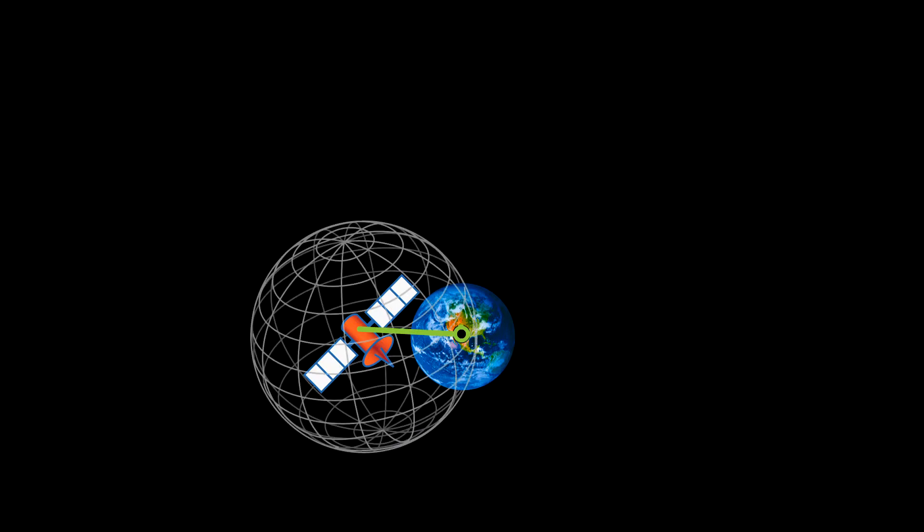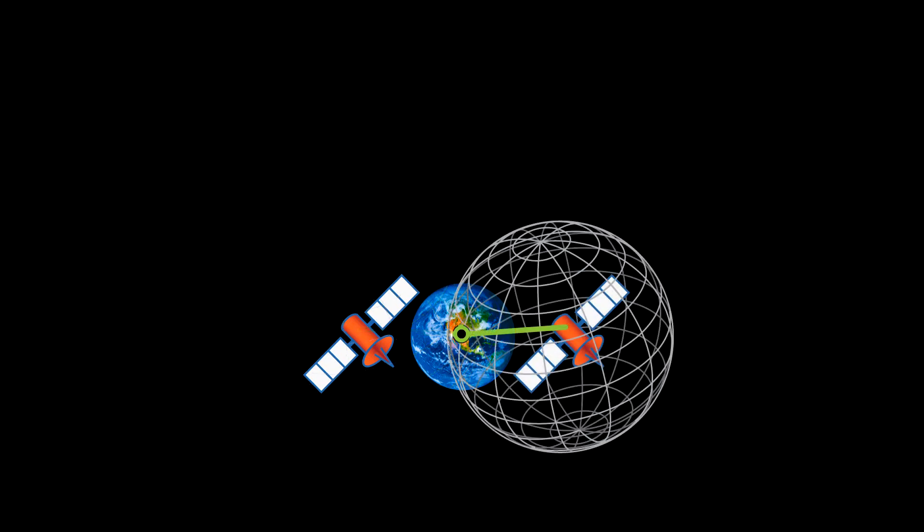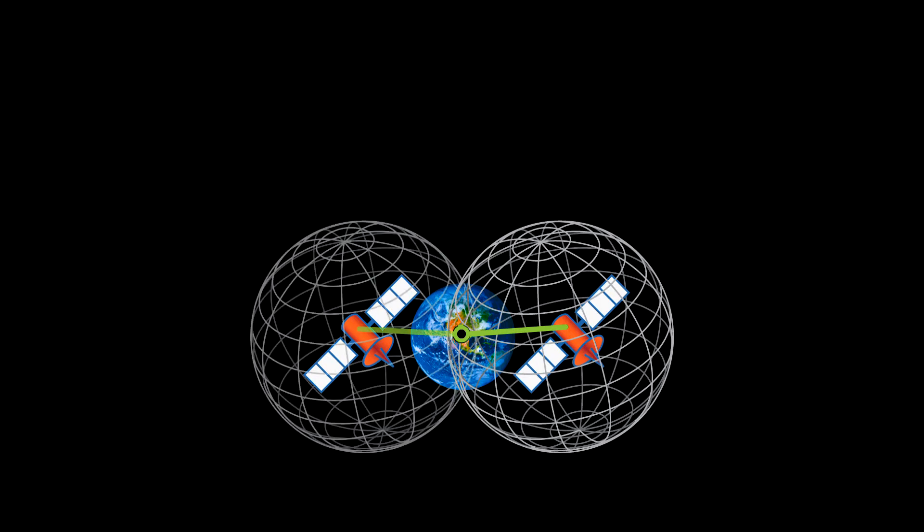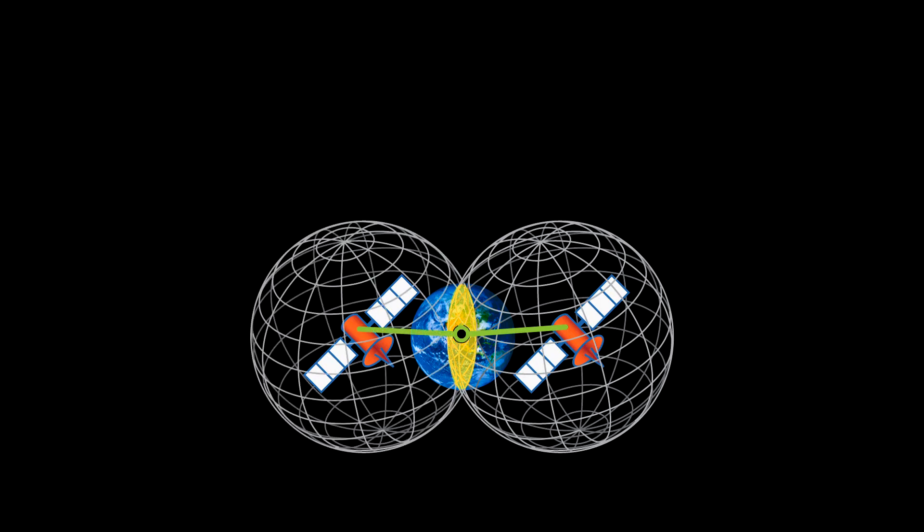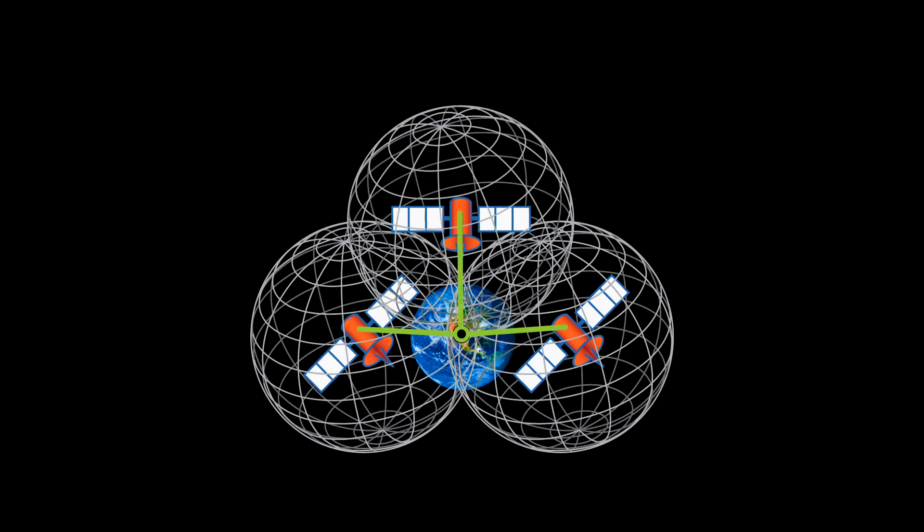With one satellite, the receiver knows that it's located on a sphere around that satellite with a radius equal to the calculated distance. It does the same calculation with the second satellite. The intersection of these two spheres narrows the location to the circumference of a circle. Then with the third satellite, the receiver can reduce the location to a single point.